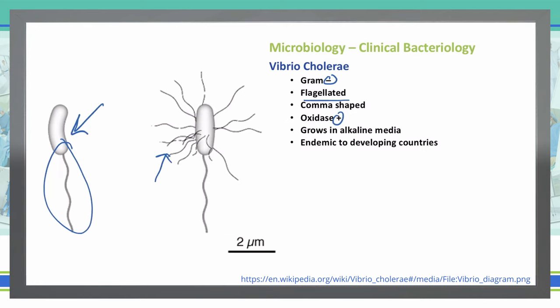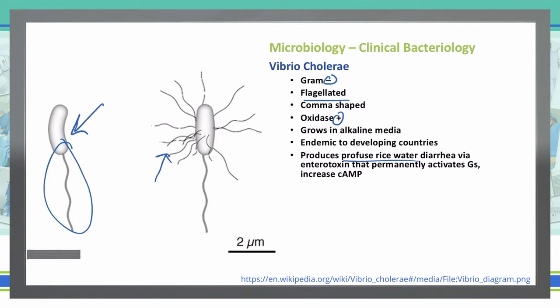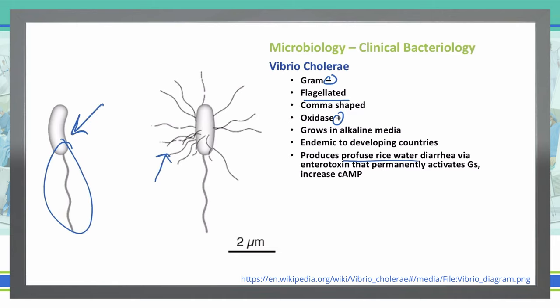A lot of times you see people that have Vibrio cholera — the cholera goes through them. They have the side effects, which is a profuse rice water diarrhea that can get out into potential drinking water in these developing countries, and it can spread that way through infected water.